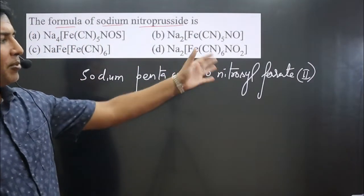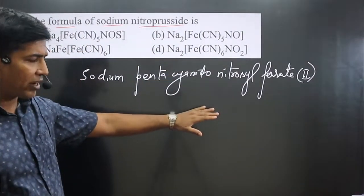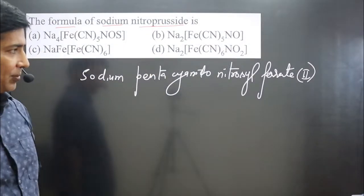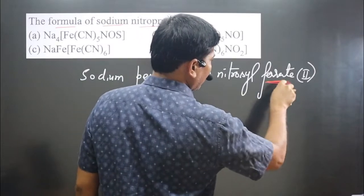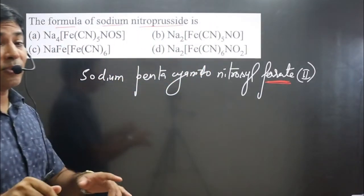If we write the chemical formula of this IUPAC name, then we can answer this question. Now pay attention very carefully. You can see the special name of the central element is given here, ferrate, it is not given iron.